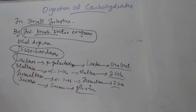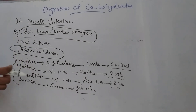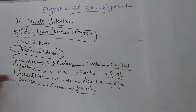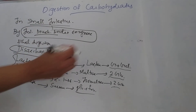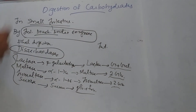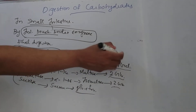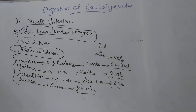All these complex dietary carbohydrates — starch, glycogen, and disaccharides — are ultimately converted to simpler monosaccharides. These monosaccharides are then absorbed through the intestinal wall into the bloodstream and transported to different cells in the body. This is the digestion of carbohydrates. Thank you for watching.